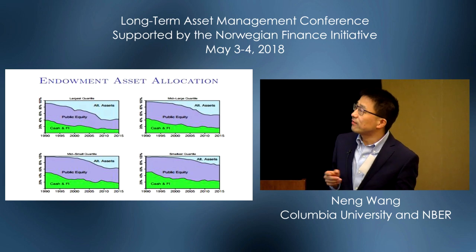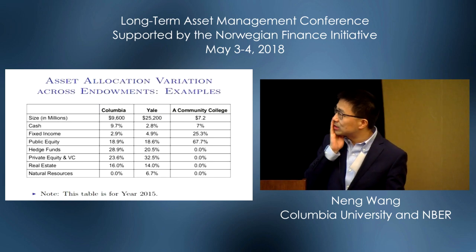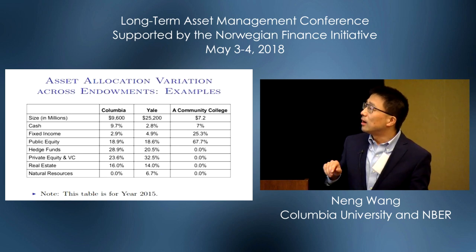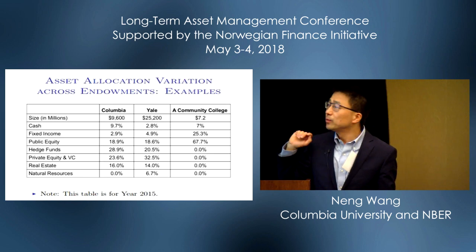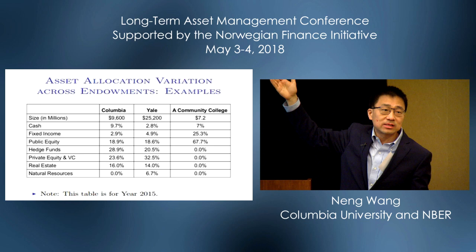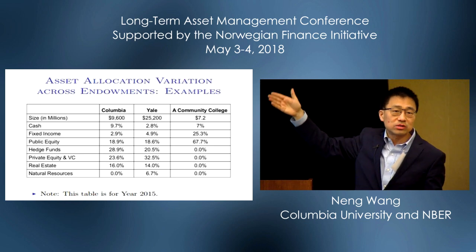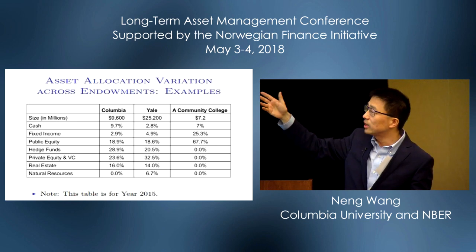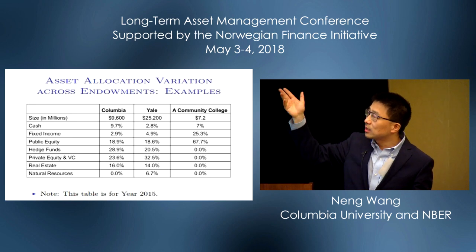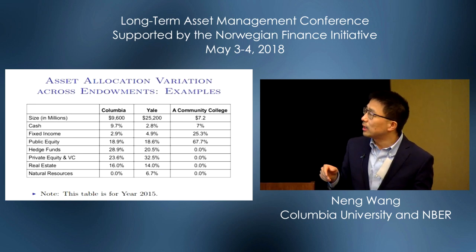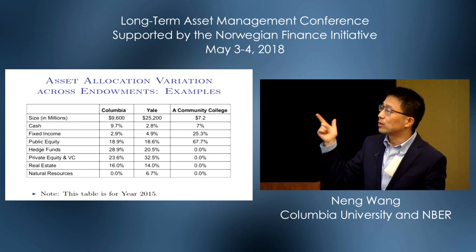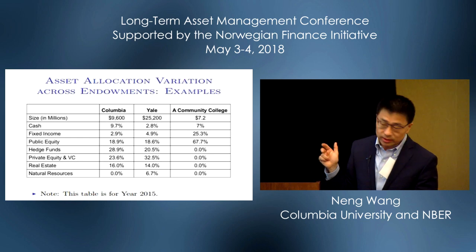So these are sort of stylized facts. I checked Columbia and Yale — slightly outdated — and I pulled out one community college. What you can see is that the standard 60-40 allocation rule holds for small endowments: they're only in public equity and fixed income cash. But for Columbia and Yale, you can see that they're heavily exposed to private equity, hedge funds, real estate, and natural resources.